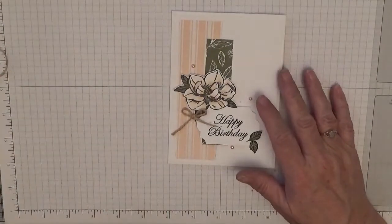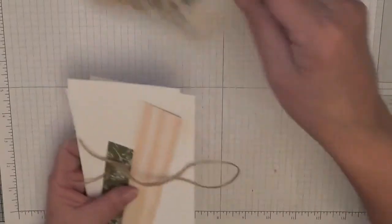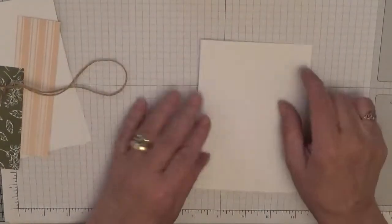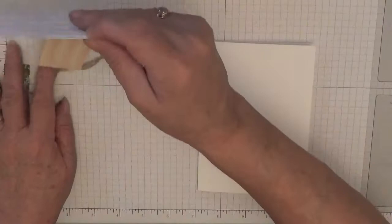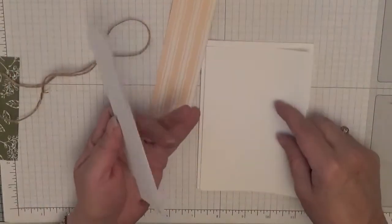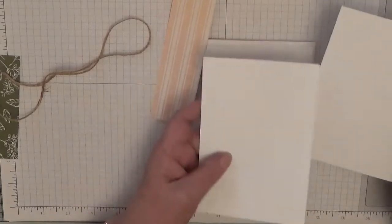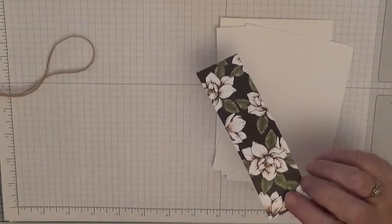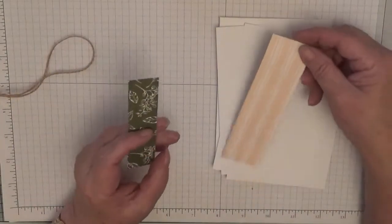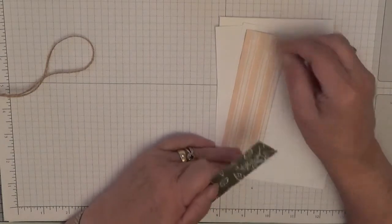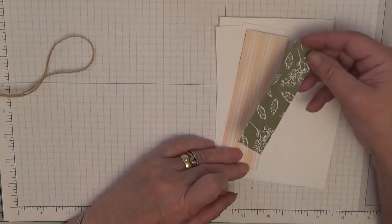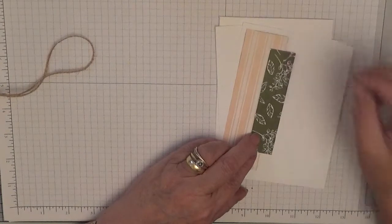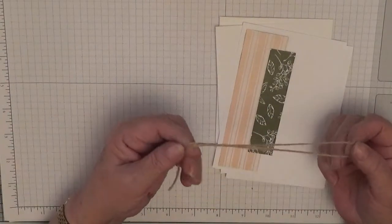So to get started we need a card base of eight and a quarter by five and seven eighths, scored at four and one eighths, folded in half. Three pieces of white cardstock, one for the front, one for the inside and one to do our stamping and cutting out. I've got some Magnolia Lane designer series paper and I've picked the stripes. I'm using the reverse with the Mossy Meadow green, and I've got a bit of linen thread to make our little bow.